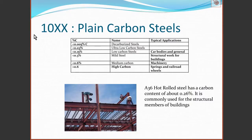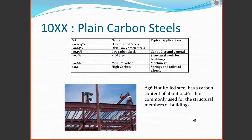An example of plain carbon steels is the 100 series. These are very cheap and so they're very widespread in use. In construction, A36 hot rolled steel has a carbon content of about 0.26 percent. It's very commonly used for structural members of buildings — one of the cheapest steels and it's very easy to join through welding and relatively easy to shape.